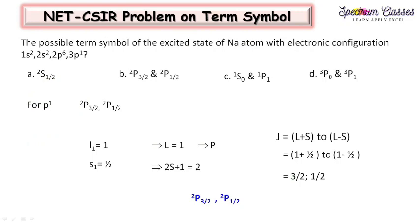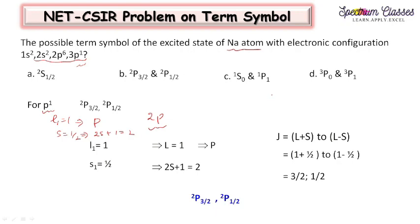The next question: what are the possible term symbols for the excited state of sodium with configuration 1s2, 2s2, 2p6, 3p1? Only 3p1 participates. For p1, L = 1 giving the P state, and one electron gives S = 1/2, so 2S+1 = 2, making 2P the term. For J values, L+S to L−S gives J = 3/2 and J = 1/2, so the terms are 2P3/2 and 2P1/2.